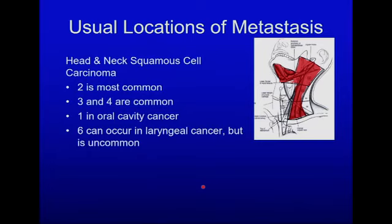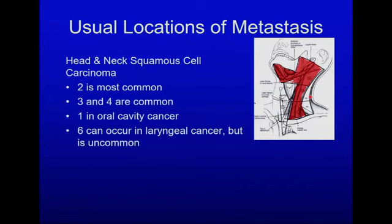To summarize head and neck carcinoma, the usual locations of nodal metastases are level 1 for oral cavity cancer. Otherwise most metastases occur in level 2, level 3, and less commonly level 4. Level 6 is uncommon but can occur in subglottic laryngeal carcinoma. Level 5 is uncommon except in extensive disease.